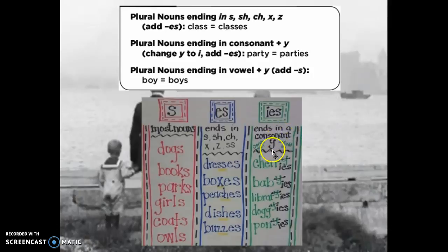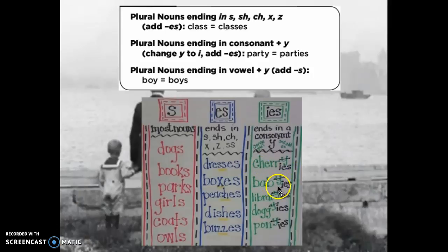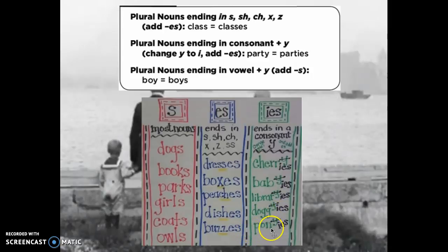Here are examples for nouns that end in a consonant and a Y — remember you change it to I and add ES. So 'cherry' becomes 'cherries,' 'baby' ends in B-Y so you drop the Y and add ES to get 'babies,' 'library' — drop the Y and add ES, 'doggy' becomes 'doggies,' and 'pony' — consonant and a Y — you add IES.